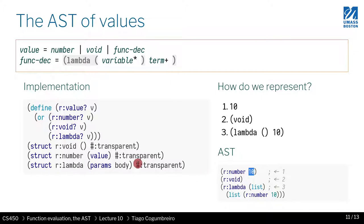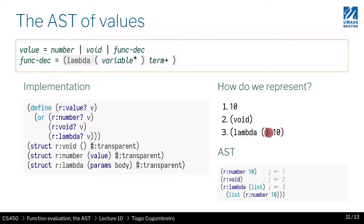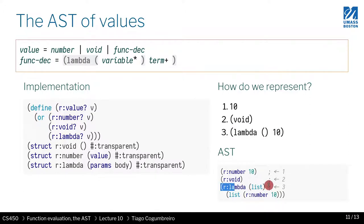Similarly for void, I just create an instance of void. As you can see, void doesn't take any arguments, so I'm just calling it like so. Finally, I have a lambda, and a lambda deserves a bit more explanation. The first example is a lambda that expects exactly zero parameters and returns 10. We would write it as (our-lambda) with an empty list for parameters, and then the body has to be a list because the body of a function declaration is one or more terms.